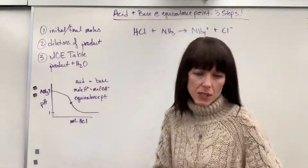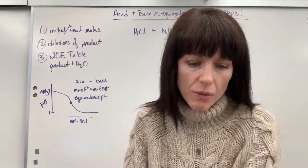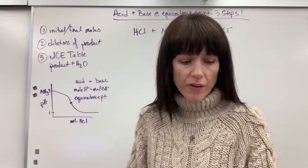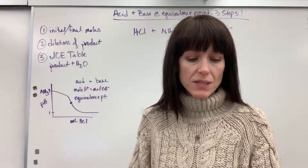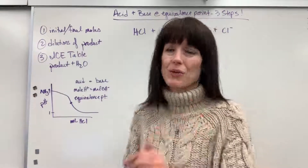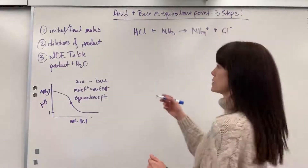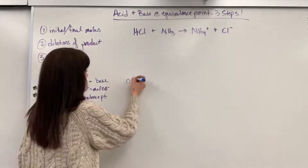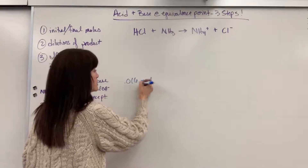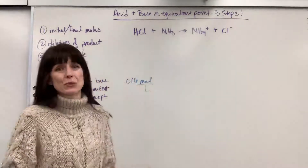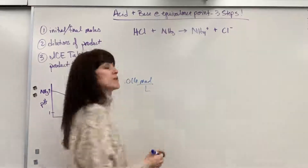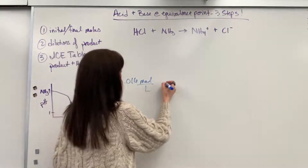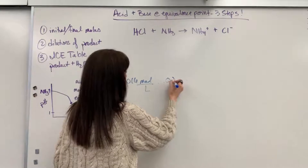Let's look at this particular problem. We are told that we have 25 mL of a 0.016 molar ammonia and 25 mL of a 0.016 molar hydrochloric acid. We have 0.016 molar — remember that's moles per liter — and we're told we have 25 mL. So 25 mL divided by 1,000 to get that to liters gives us 0.025 liters.